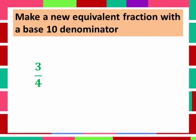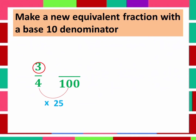Next example is 3 over 4. Again, find a number that you can multiply the denominator by to make a new equivalent fraction. We can't find a number that if you multiply by 4, the answer is 10. So, think of a bigger number — how about 100? What number do you have to multiply to 4 to make it 100? Yes, 25. So, 4 times 25 is equal to 100. To get the numerator, multiply 3 by 25 — it will become 75. Therefore, 3 fourth is now 75 over 100, and 3 over 4 or 75 over 100 is equal to 0.75.